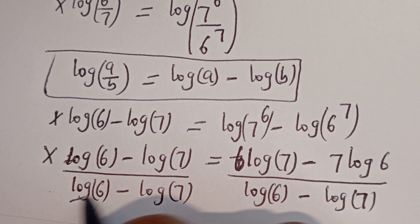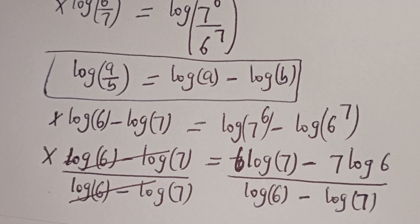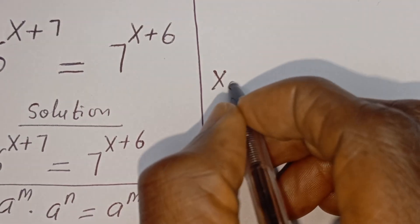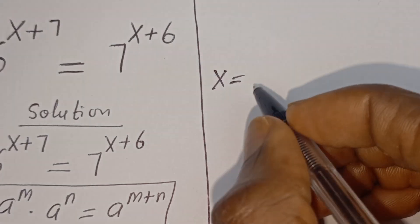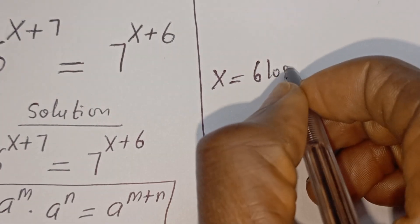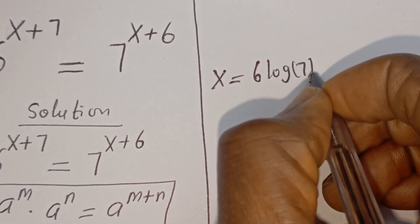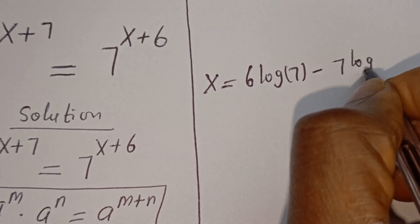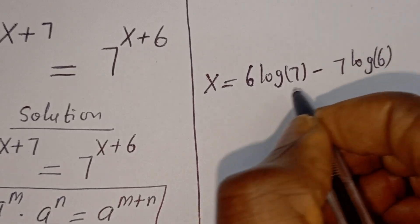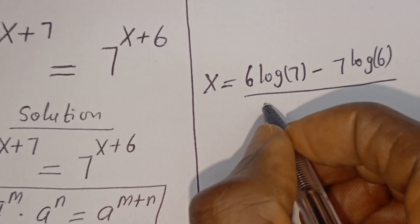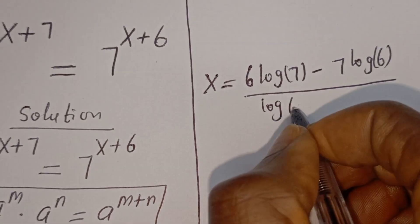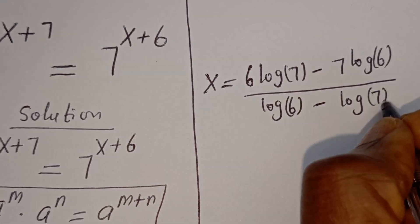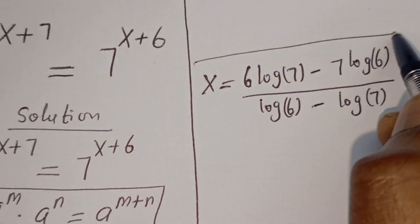This cancels out, and x is equal to 6 log 7 minus 7 log 6 divided by log 6 minus log 7. And this is the final answer.